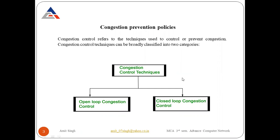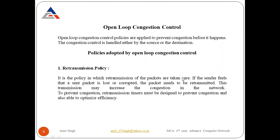The first category is open loop congestion control. Open loop congestion control policies are applied to prevent congestion before it happens. Congestion control is handled either by the source or by the destination. These policies are applied when we estimate that congestion might occur, so we apply them proactively to prevent congestion problems before they arise.